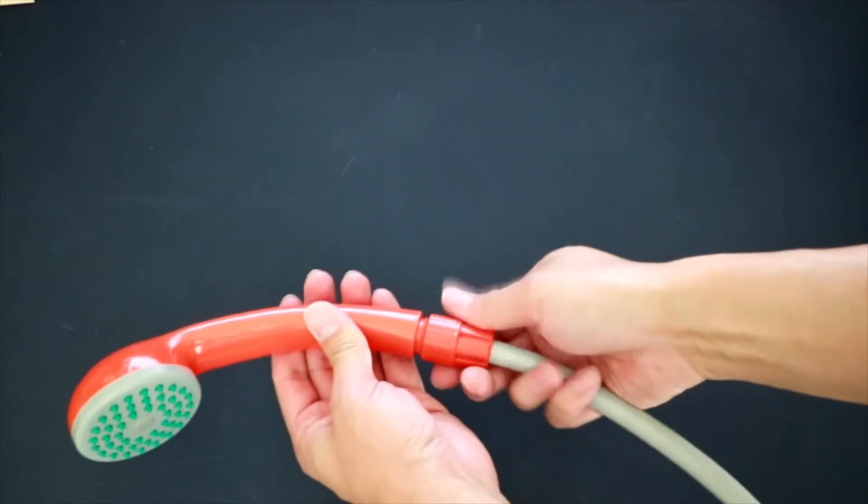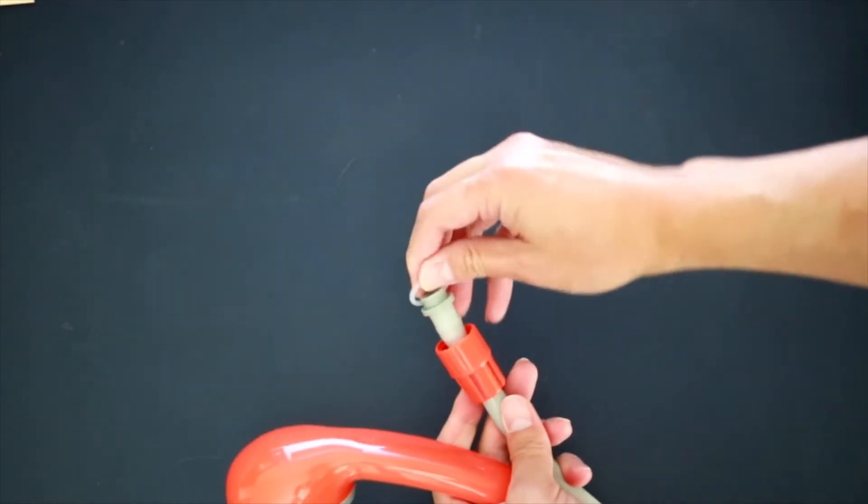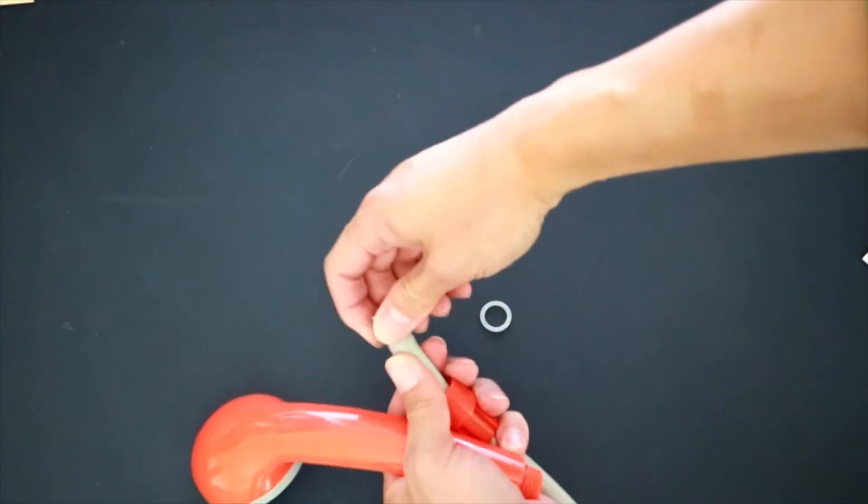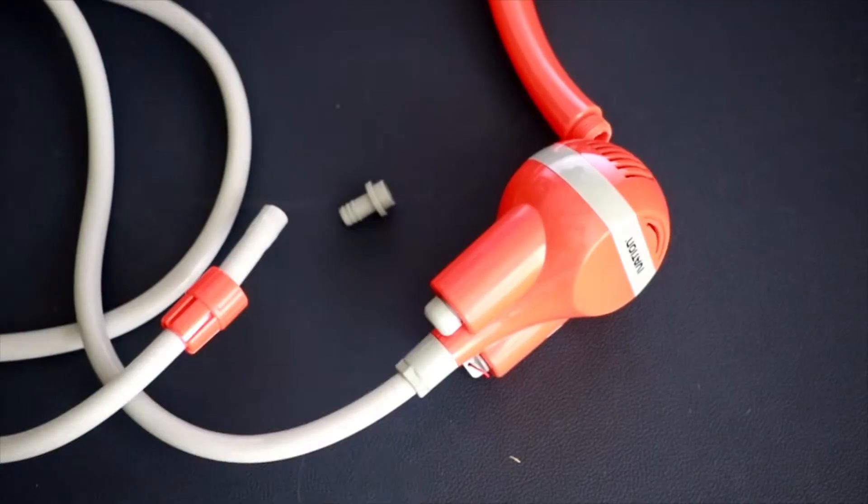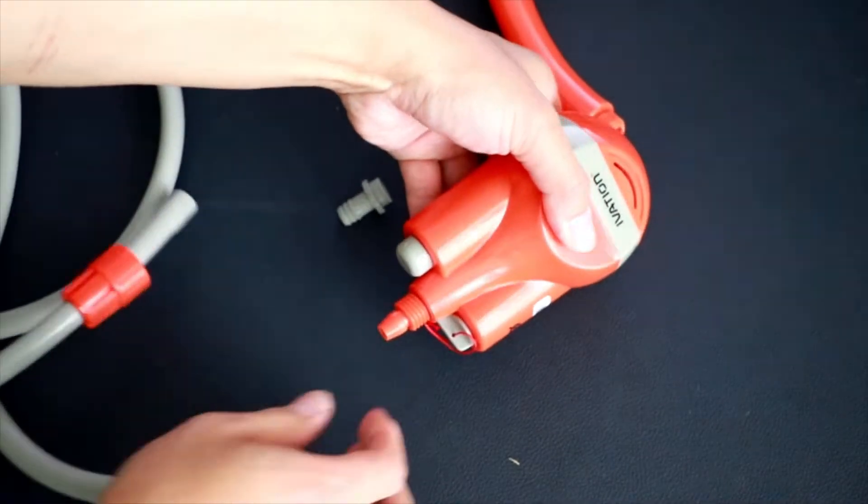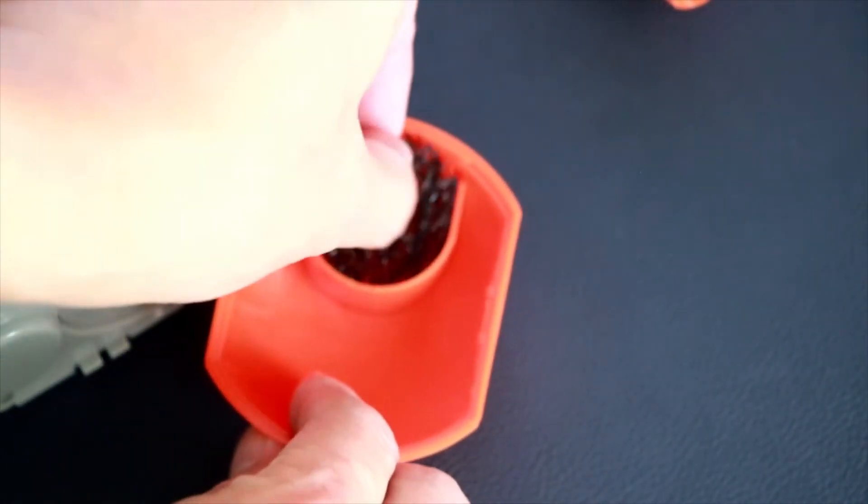To disassemble and clean it, follow those steps. Spin off the shower head, take out the rubber ring, then take out the adapter. Spin off the motor. Open the motor end cap like this. It is pretty easy to snap it off. The black piece is the filter. Clean the filter as necessary.